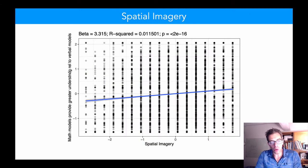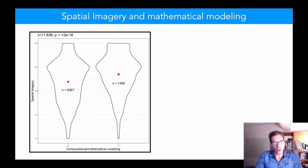One of the more robust relationships we found is that between spatial imagery, this is more in the scientifically interesting category, the relationship between spatial imagery and endorsement of mathematical models. Even more so the use of mathematical models. So those who use them have greater spatial imagery as assessed through a mental imagery questionnaire.